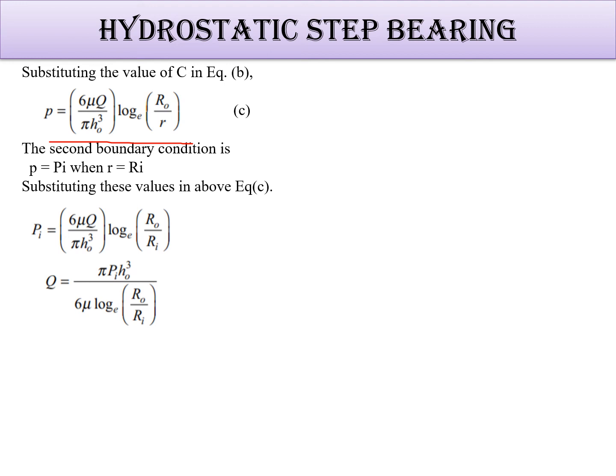In case of p we have put Pi, and in place of r we have put Ri. So this Ro upon Ri is there. So Q will be what? πPi h0³ divided by 6μ log to the base e Ro upon Ri. So the flow equation is in this way. This is the final equation to calculate the flow requirement of the bearing.